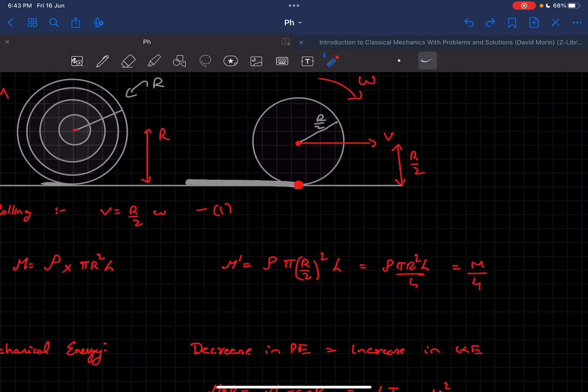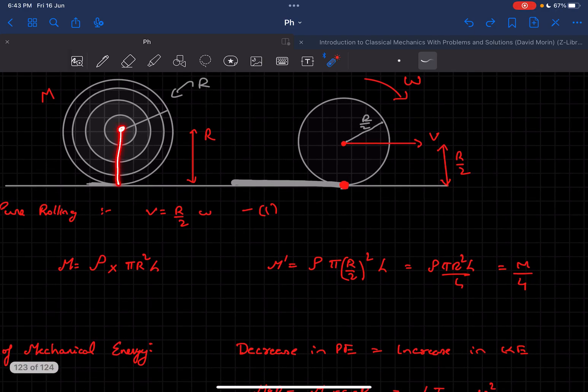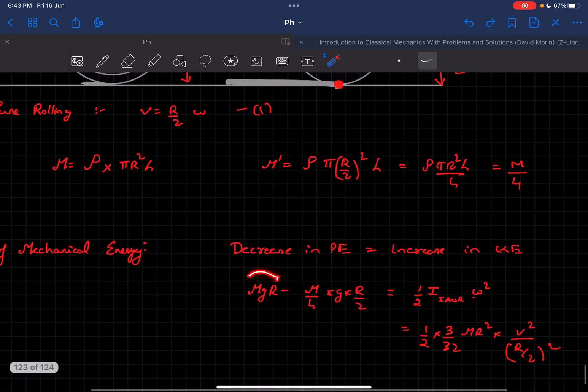What is the decrease in potential energy? Initially the center was at a height of R from the ground and its mass was m. Finally, the mass is one-fourth and the height is r/2 from the ground.